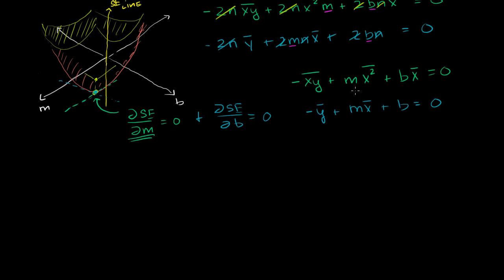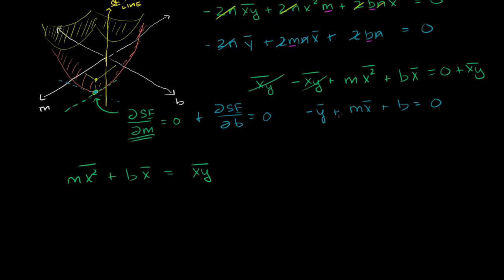I want to rewrite these equations because it's interesting to see what they represent. Adding the mean of xy's to both sides of the top equation gives: m times the mean of x squareds plus b times the mean of x's equals the mean of the xy's. Then adding the mean of y's to both sides of the bottom equation gives: m times the mean of x's plus b equals the mean of the y's.